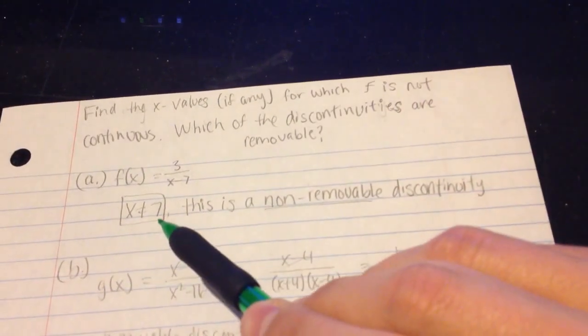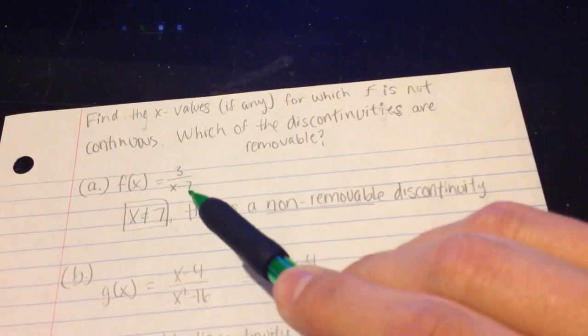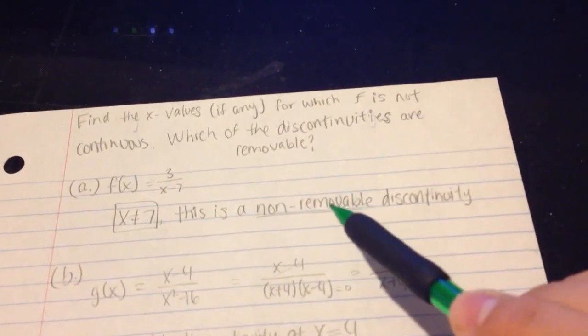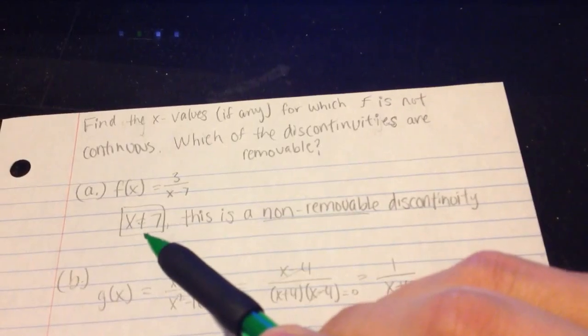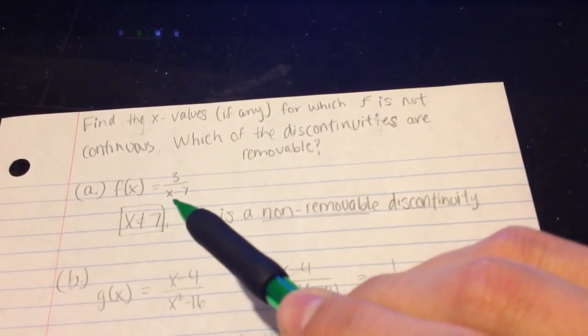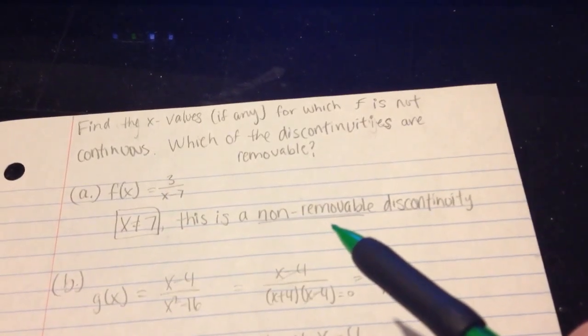And in this case, if you put in the value positive 7 into the denominator, that would create a 3 over 0. And that would be a non-removable discontinuity. Any and all other values could make it, even negative 7 would be okay. 7 is the only one that doesn't work, and that again is a non-removable discontinuity.